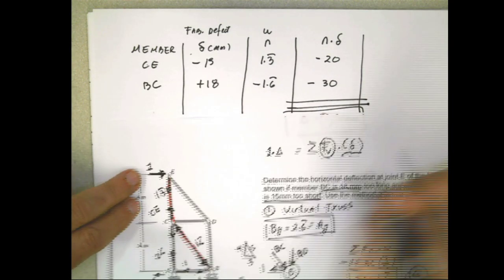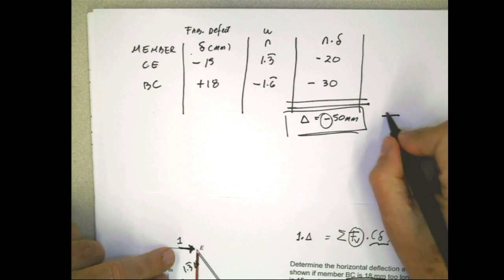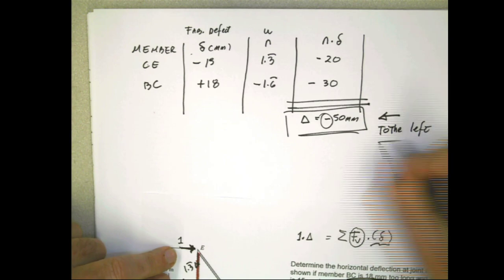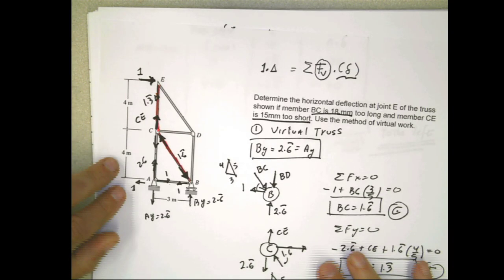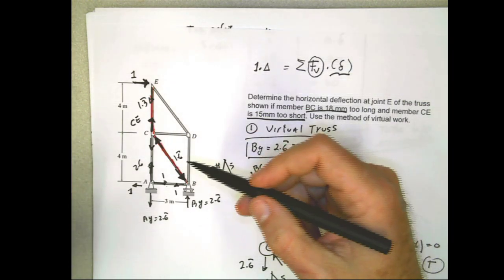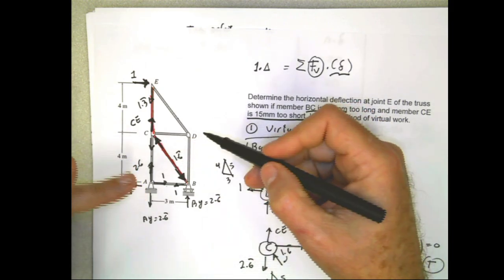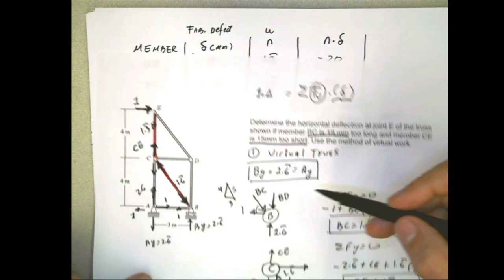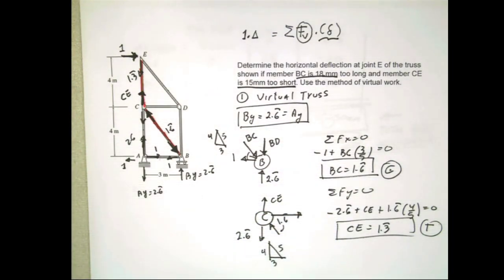The negative sign means that we assumed our virtual force going to the right, so the negative result means the deflection is going to the left — point E moves to the left. That's all this problem asks. This problem could also ask for the vertical deflection, or for fabrication errors combined with loads — then you just repeat this for the external loads and add both effects into one result. The next video will cover temperature changes in the structure. See you later.